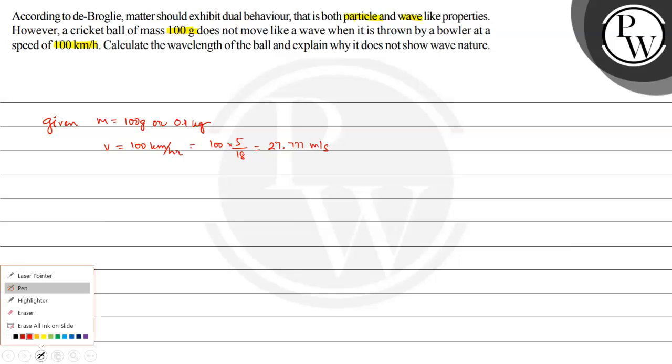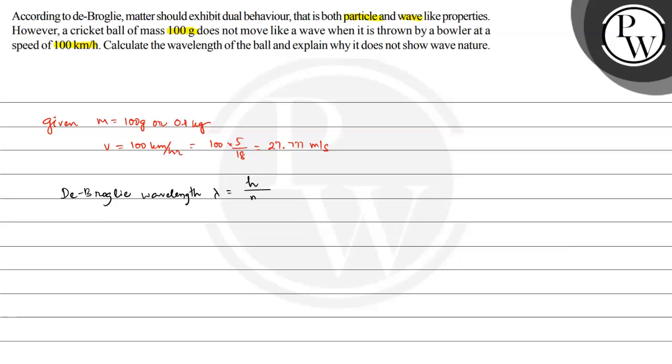Now we know that de Broglie wavelength lambda is equal to h by mv, or h by momentum. So this momentum is mv and the ball of mass is 0.1 kilograms and velocity we know this is 27.777 meters per second.